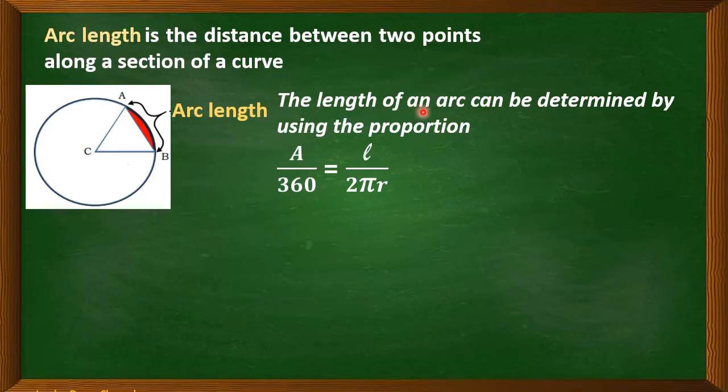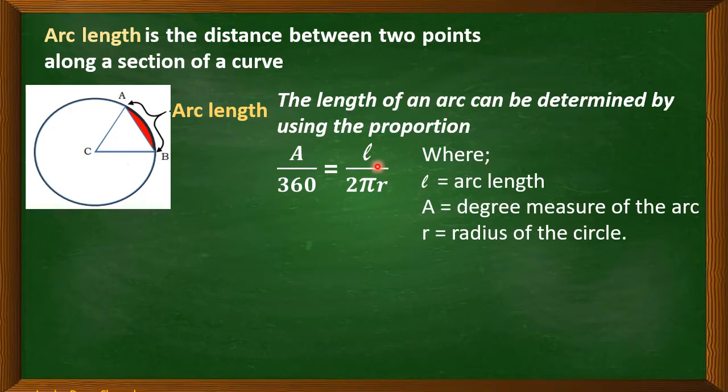Now, the length of an arc can be determined by using the proportion A over 360 is equal to arc length over 2πR.